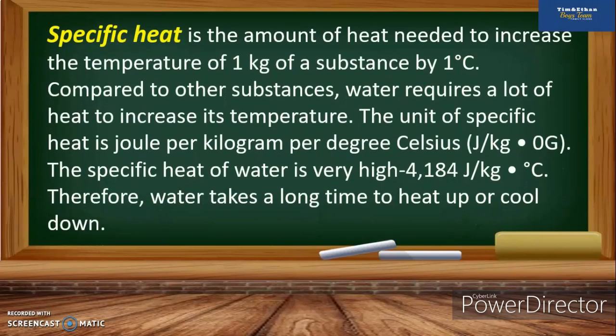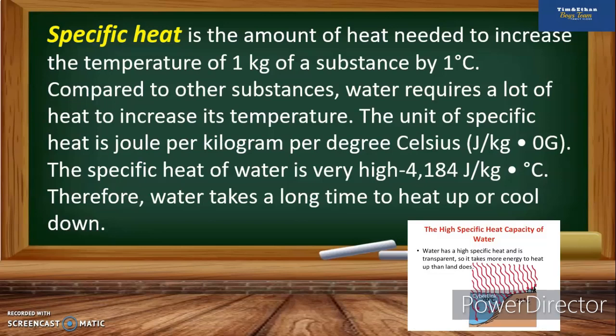Specific heat is the amount of heat needed to increase the temperature of one kilogram of a substance by one degree Celsius. Compared to other substances, water requires a lot of heat to increase its temperature. The unit of specific heat is joules per kilogram per degree Celsius. The specific heat of water is very high — about 4,184 J/kg·°C — therefore water takes a long time to heat up or cool down.